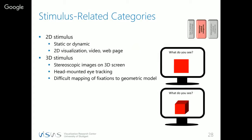Finally, in the stimulus context, we distinguish between 2D stimuli — typical 2D visualizations, videos, or web pages — and actual 3D stimuli, where you might have a stereoscopic display or a head-mounted eye tracking device in a real-world 3D scenario. With a 3D stimulus, you have much more difficulty mapping fixations or gaze data to the underlying geometric model.